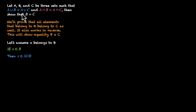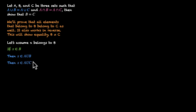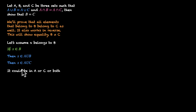The question says A union B is the same as A union C, which means if x belongs to A union B, it also belongs to A union C. So if x belongs to B, then x belongs to A union C, which means x is either in A or in C or both.